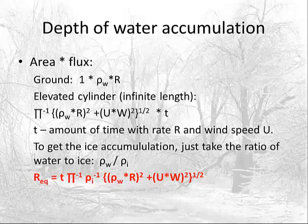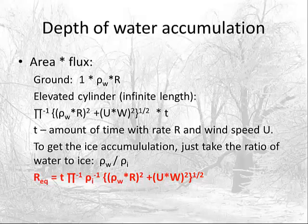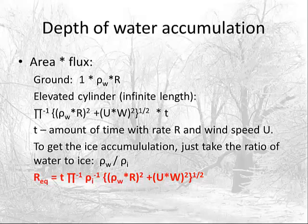The mass of ice will differ because a larger branch has more volume, but the thickness is the same. The depth of water is that area ratio times the flux. For the ground it's rho-W times R. For the elevated cylinder it's one over pi times the flux vector: the square root of (rho-W times R squared plus U times W squared) times the duration. To get ice accumulation, multiply by the density ratio rho-W divided by rho-I. So ice thickness is a function of wind speed and liquid water content, which itself is a function of rainfall rate.